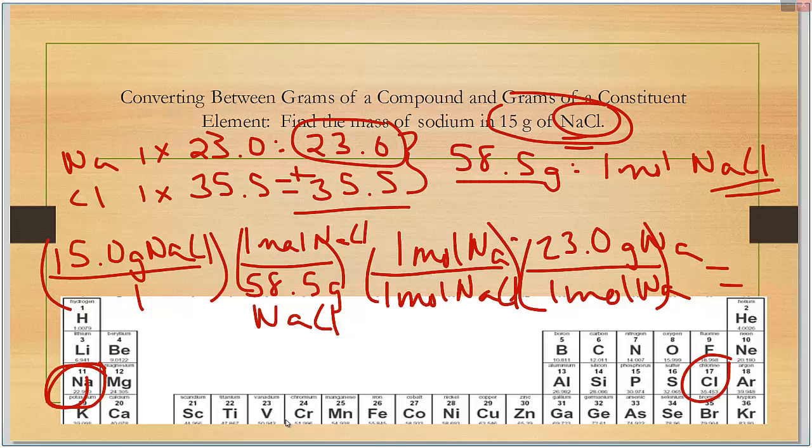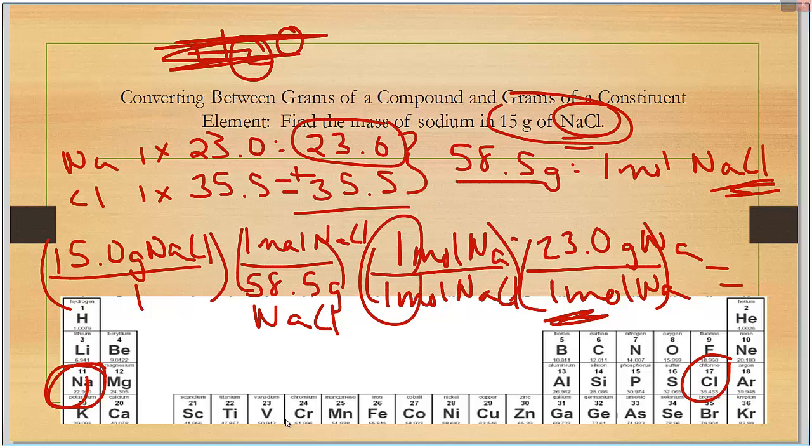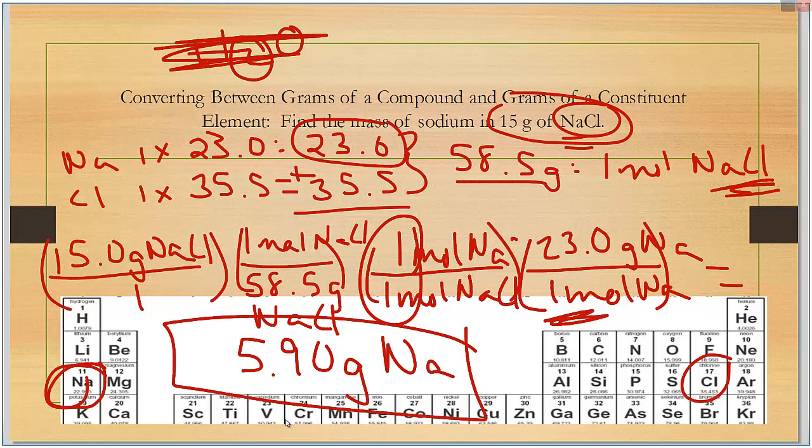I said that you want to look directly on the periodic table because I don't want you to get into the trap of multiplying it by the subscripts. So if it's, for instance, H2O and you're looking at hydrogen, don't multiply hydrogen by two because it's of one mole. We already have that number calculated in right there. So 15 divided by 58.5 times 23 comes out to be 5.90 grams of Na.